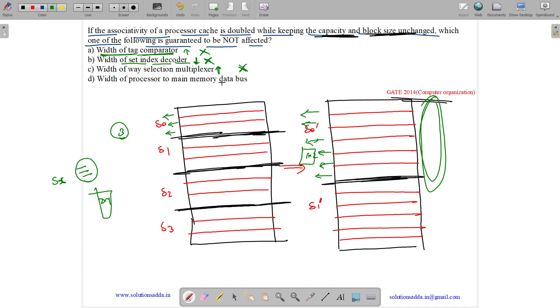Width of processor to main memory data bus. Now we have our CPU and we have our main memory. And this is our cache. Now the data bus that we are using to transfer the data, its size won't get affected because it is hard coded. So it won't get affected due to the change in the set size of the cache. Because this is an independent unit. It refers to how much data can be transferred at a time from the main memory to CPU. So the width won't change of the processor to main memory data bus. So correct answer is option D won't get affected. Thank you.